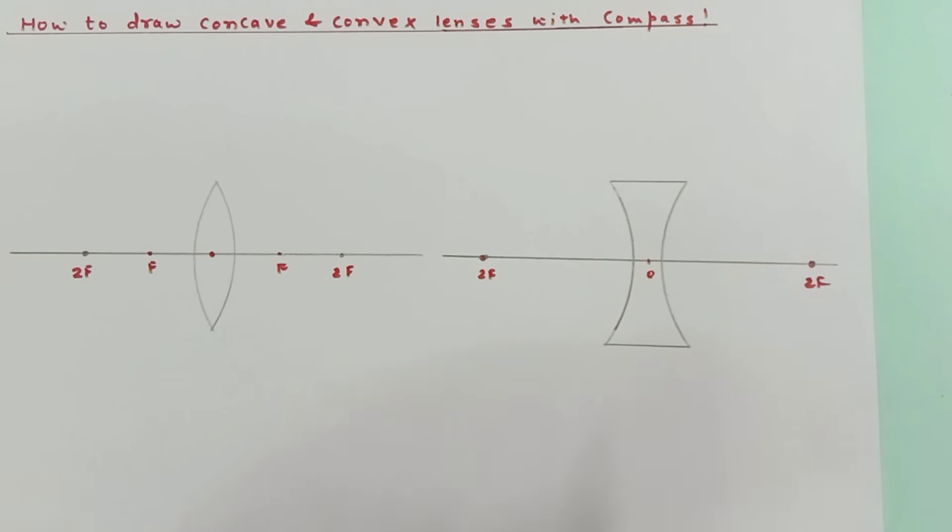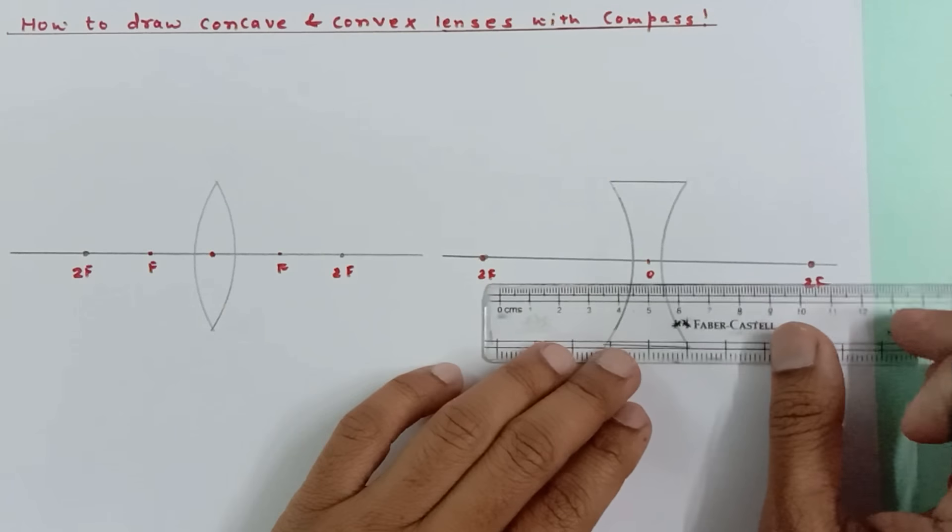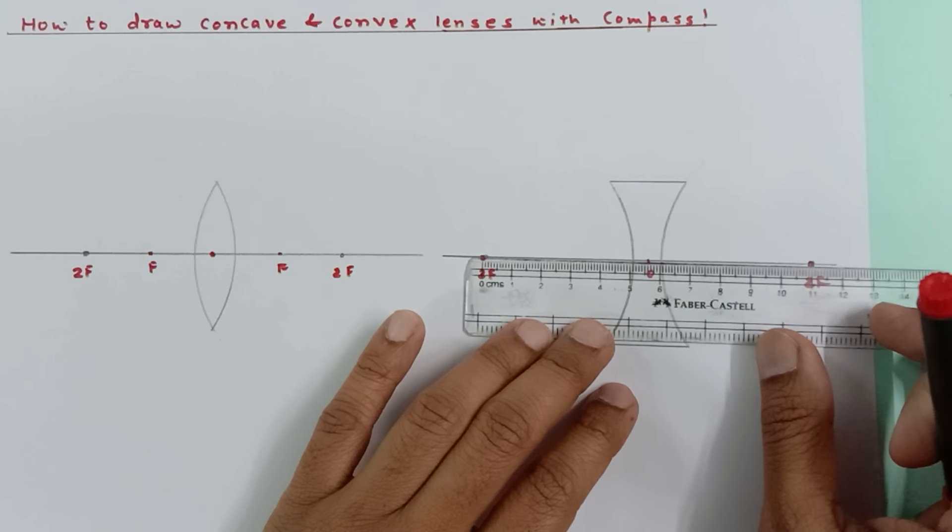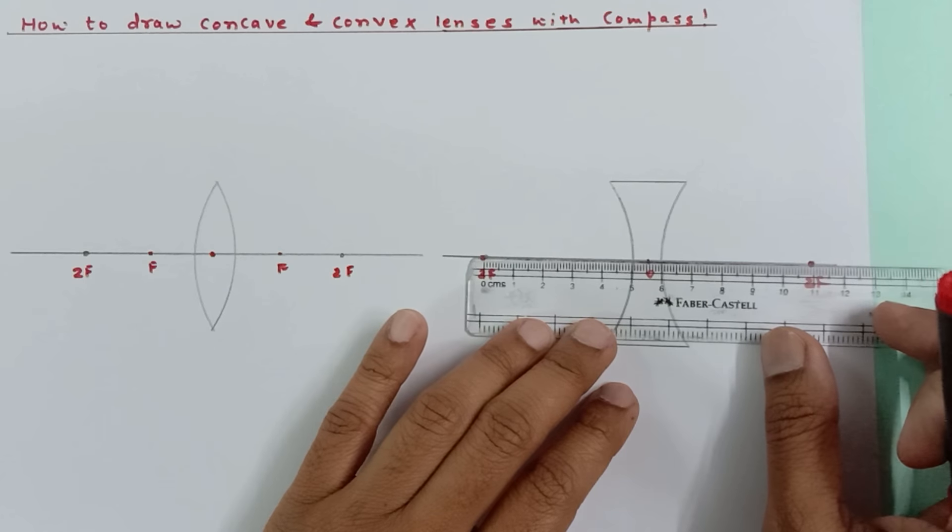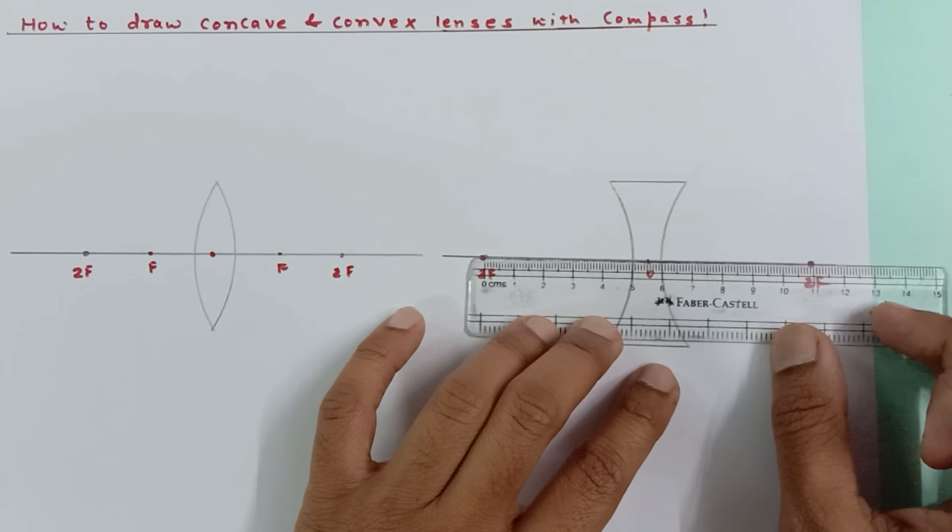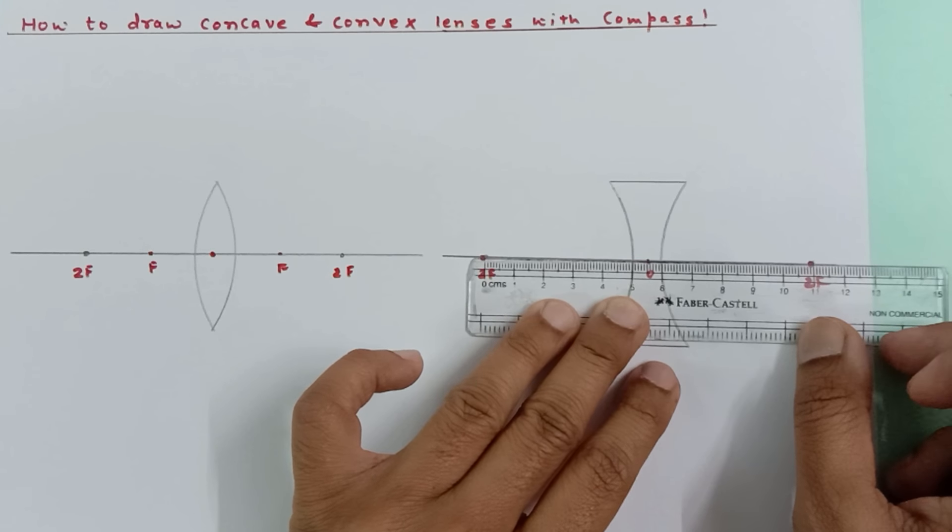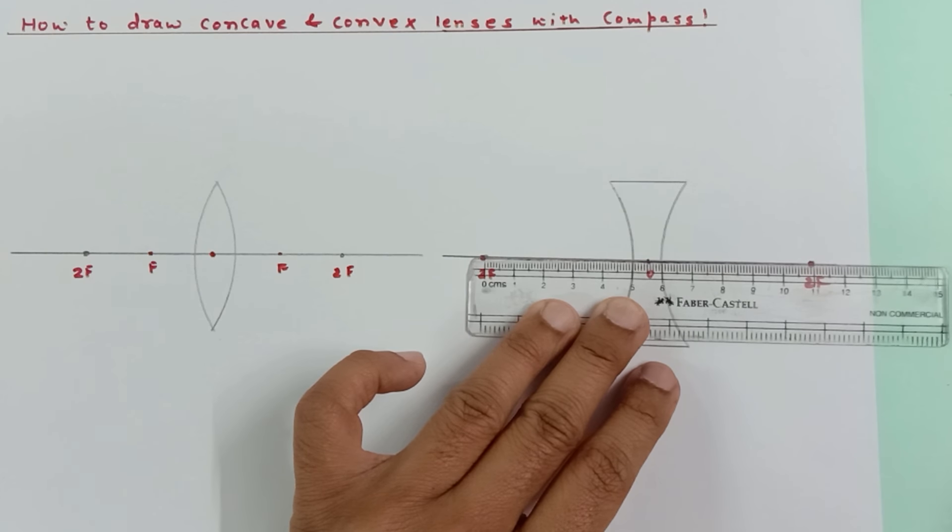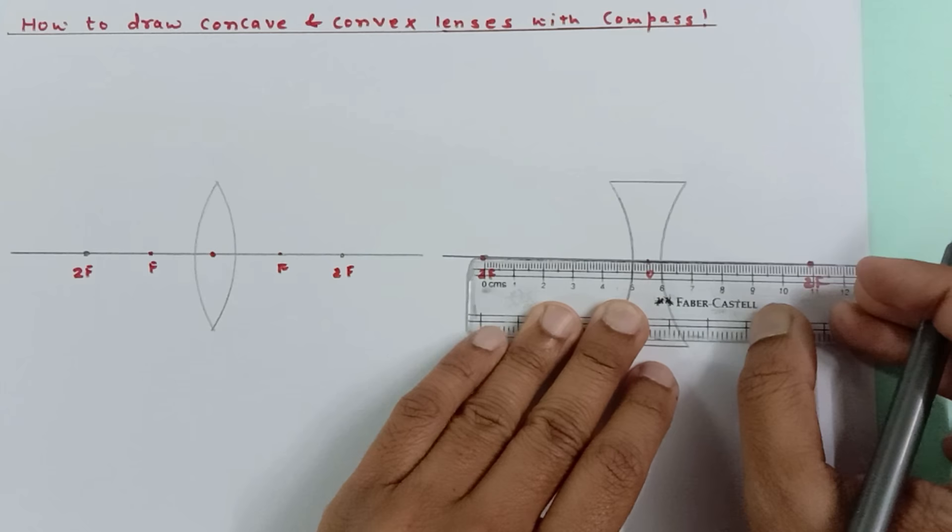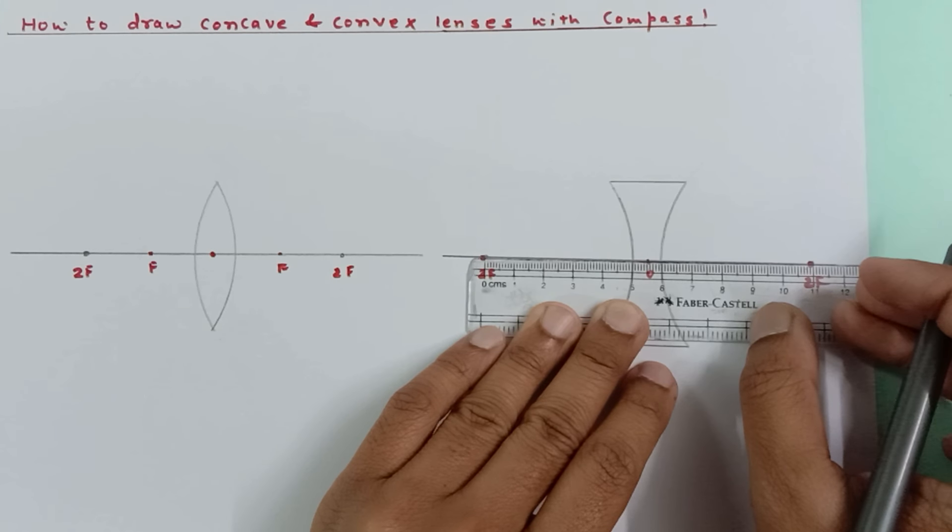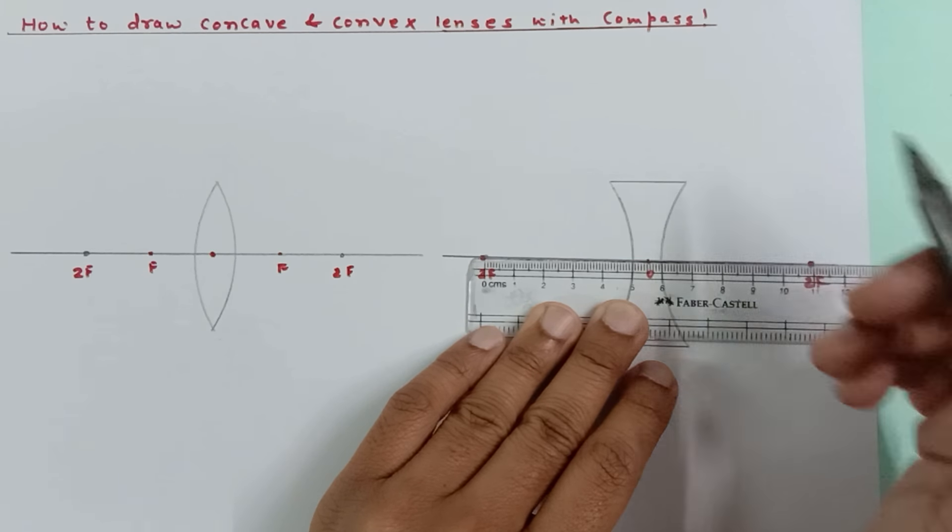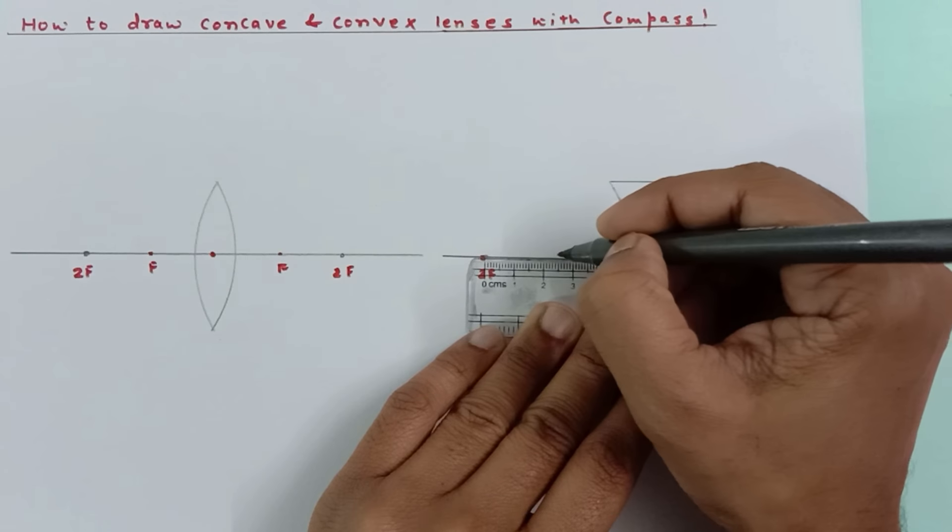Now I need to find out the midpoint, so you can do that very easily with the help of a scale. This distance is 5.6, so it would be 5.6 divided by 2 - so it would be approximately 2.8. So 2.8 is somewhere over here.